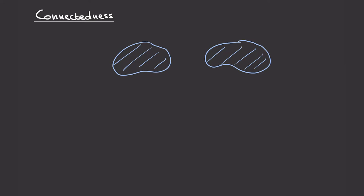This type of reasoning will be the content of the definition of connectedness in this video. Another way we could say this space is not connected is to point out that there is a point in this part and a point in that part, and there is no path between these two points. This argument leverages the intuition that in a connected space, we can get from any point to any other along some path that remains inside the space. This perspective yields a different property called path connectedness, which turns out to be stronger than the connectedness we'll see in this video — meaning any path connected space is connected, but the converse does not hold.